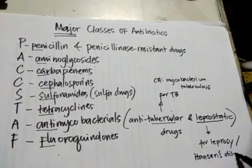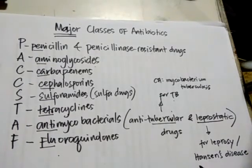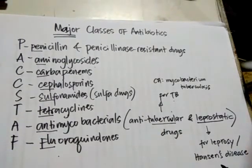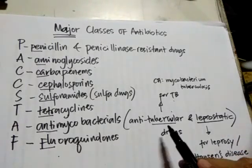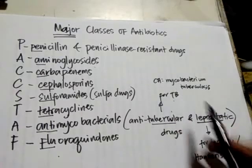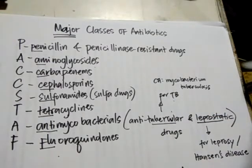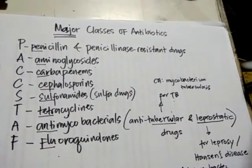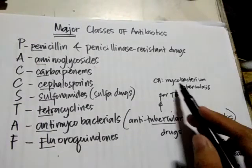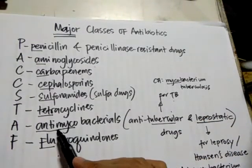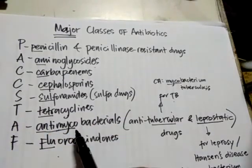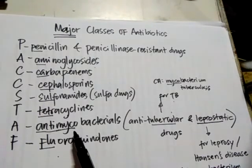Leprosy is also called Hansen's disease, named after a Norwegian doctor who discovered it. If you notice, the causative agent for leprosy also starts with 'myco' — it is Mycobacterium leprae. So this group of antibiotics is against bacteria named mycobacteria.